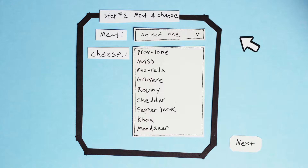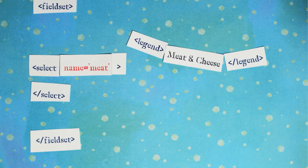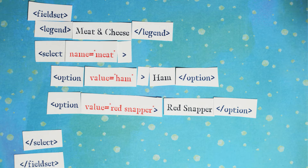This meat drop-down is a select element. Select elements contain any number of options. Options contain the text to be shown in the drop-down, and a value attribute for what is submitted to the website.